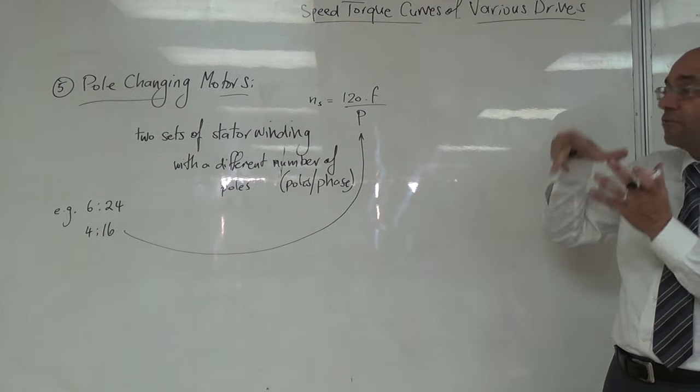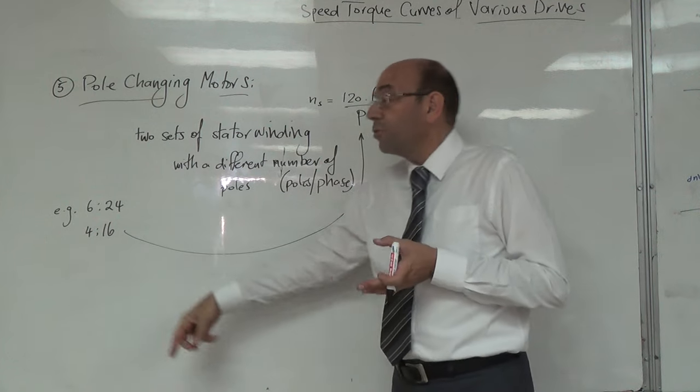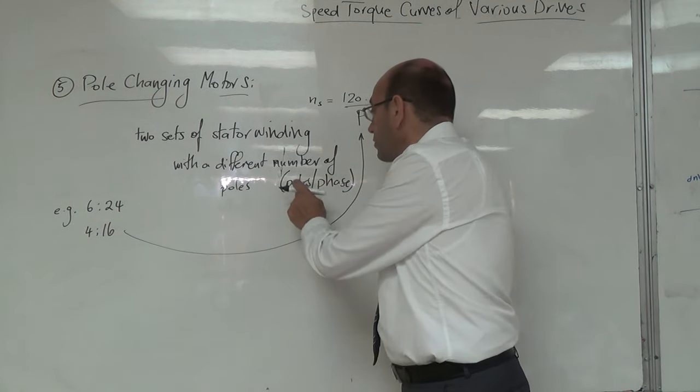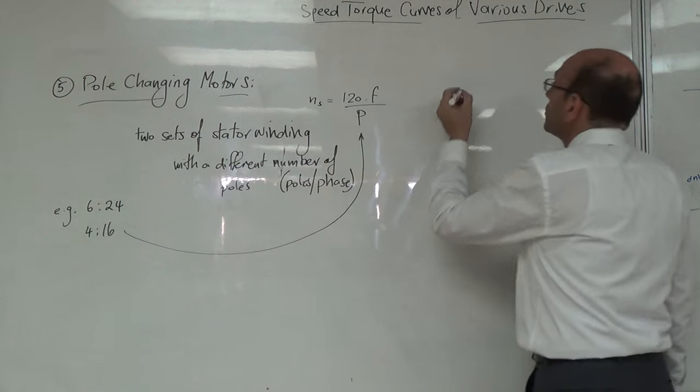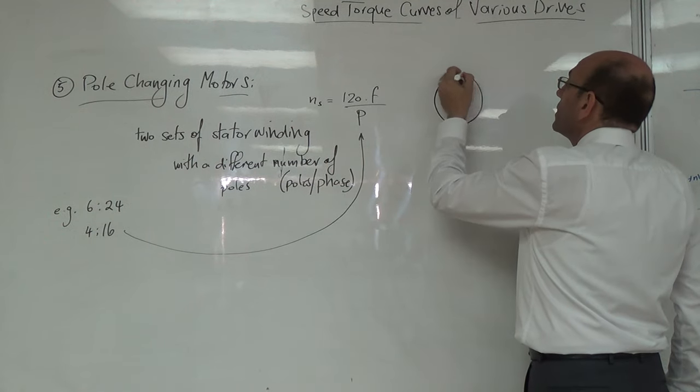في نفس الـ stator winding، عندي ستة أربعة poles وستة ثانية ستة عشر pole، ستة عشر pole pair per phase. وهذا three-phase motor. فبكون ممكن نرسمها بهذا الشكل.